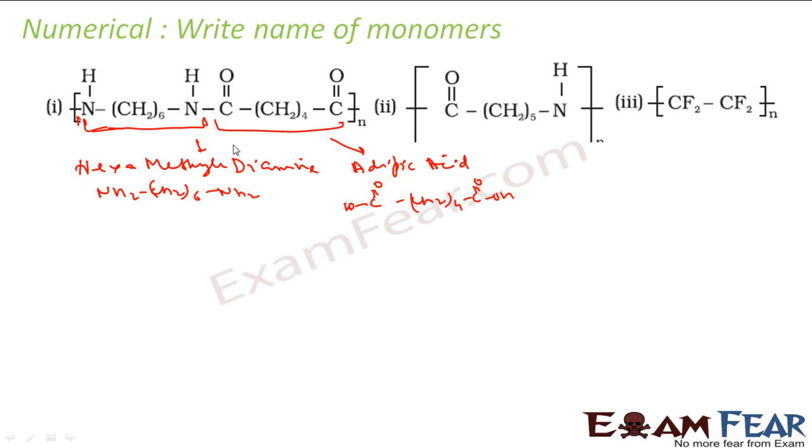And adipic acid we know is COOH here, and CH2 four times. The next is this one. This is actually, we know that this is formed from caprolactam. This is what is called the caprolactam.